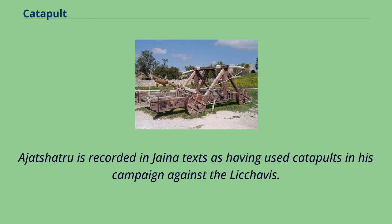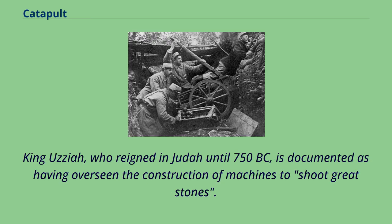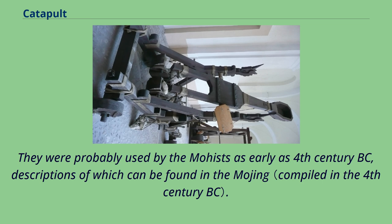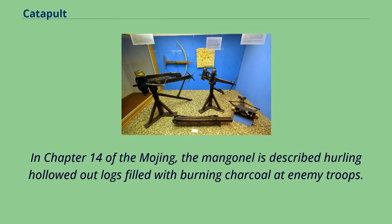Ajatashatru is recorded in Jaina texts as having used catapults in his campaign against the Licchavs. King Uzziah, who reigned in Judah until 750 BC, is documented as having overseen the construction of machines to shoot great stones. The first recorded use of mangonels was in ancient China. They were probably used by the Mohists as early as the 4th century BC, descriptions of which can be found in the Mojing. In chapter 14 of the Mojing, the mangonel is described hurling hollowed-out logs filled with burning charcoal at enemy troops.